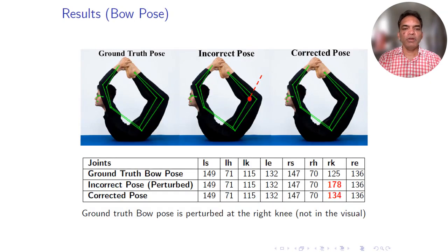Here is an example of the bow pose. The ground truth pose is this image, and we have augmented the dataset to perturb some joints to generate incorrect poses. We perturbed the right knee, which now has an incorrect joint angle of 178, and CARE has generated the correct joint angle of 134.